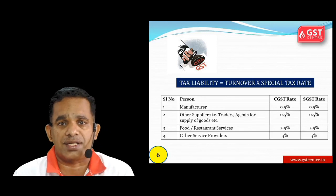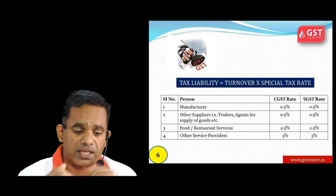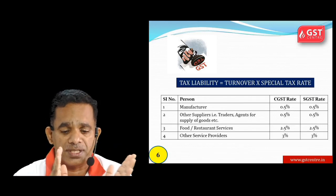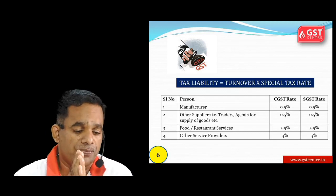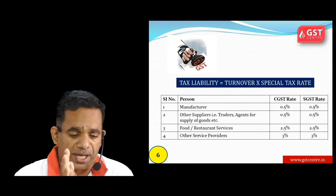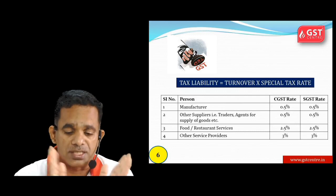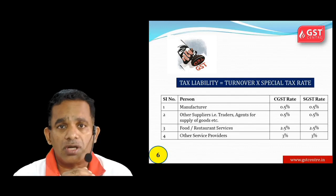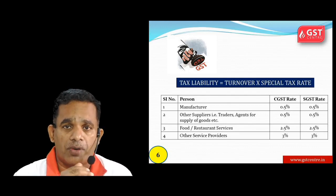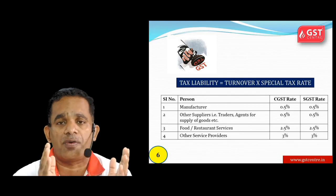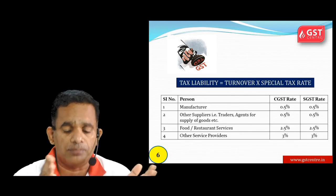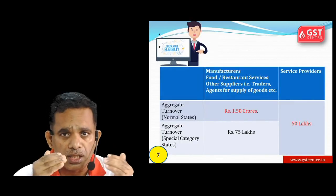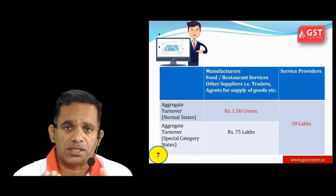Composition scheme में output tax minus input tax formula applicable नहीं होता है। Tax liability = turnover multiplied by special tax rate. Special tax rate: manufacturers के लिए 0.5% CGST और 0.5% SGST मतलब 1%; other suppliers (traders, agents for supply of goods) के लिए same 0.5% + 0.5% = 1%; food/restaurant services के लिए 2.5% + 2.5% = 5%।